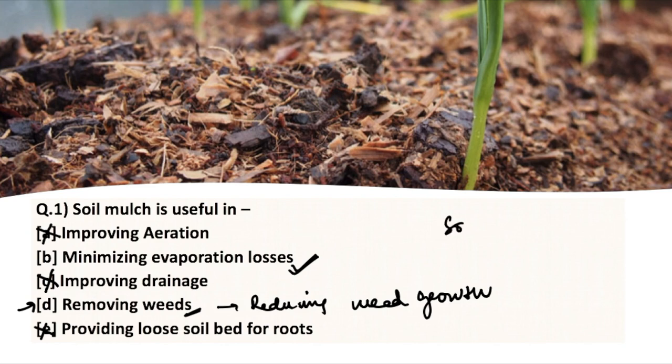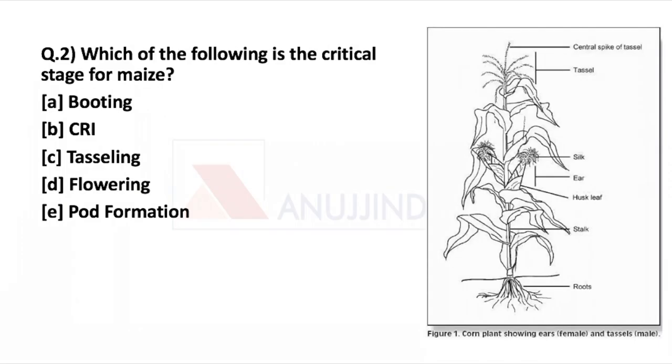Additionally, soil erosion is reduced with the help of soil mulching. We have heard about stubble mulching tillage, where the residue of the previous crop is spread on the field to stop erosion as well.